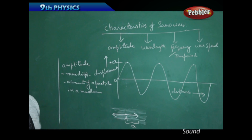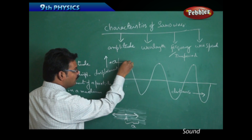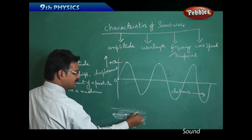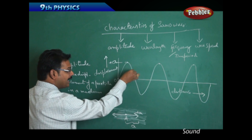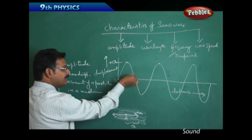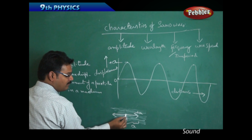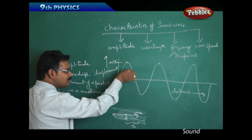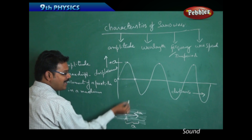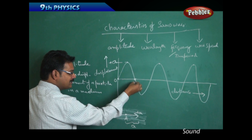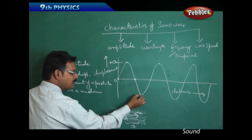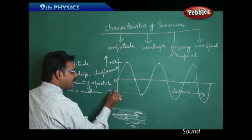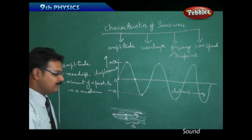When the particle goes to maximum — that is plus A — it comes back again to zero. When going back, the motion is opposite. The particle goes from here to the maximum, then comes back to zero, and then continues in the opposite direction going to the maximum value on the other side. That maximum is opposite, so we say negative amplitude, which is minus A.